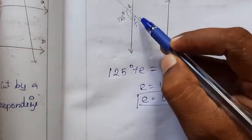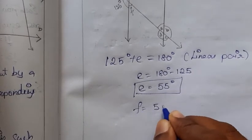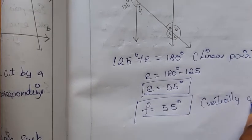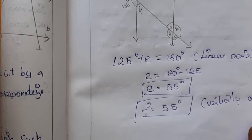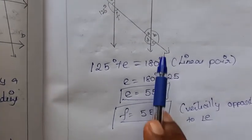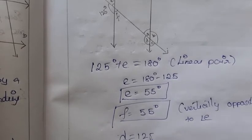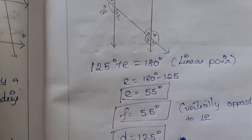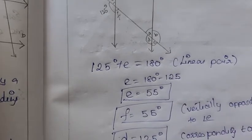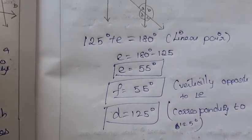F is vertically opposite to angle E, so F equals 55 degrees. D equals 125 degrees since it is corresponding to the given 125 degree angle. B is vertically opposite to D, so B equals 125 degrees.